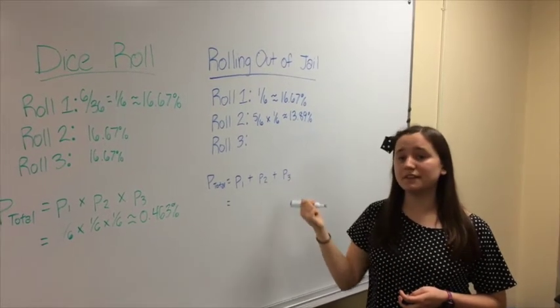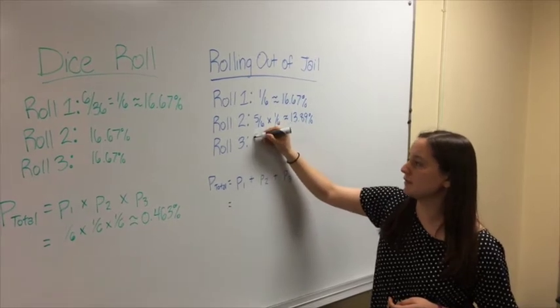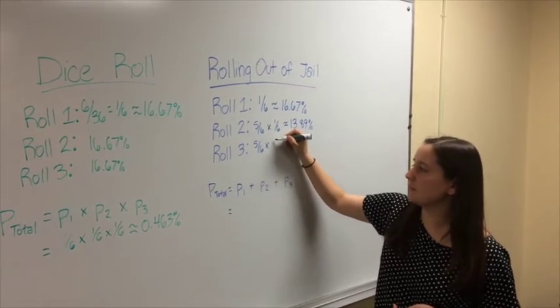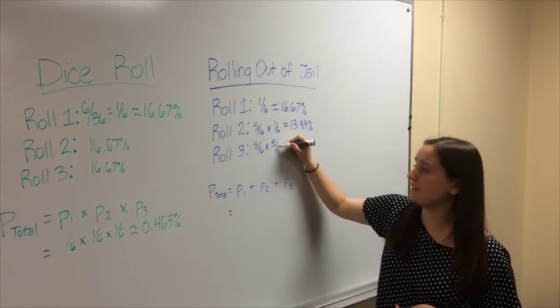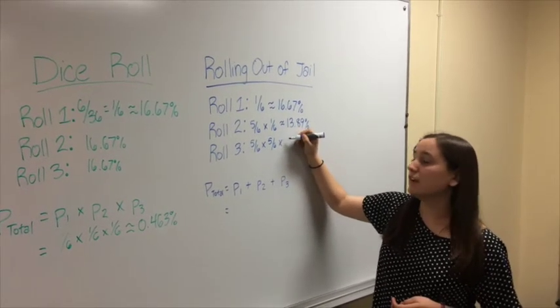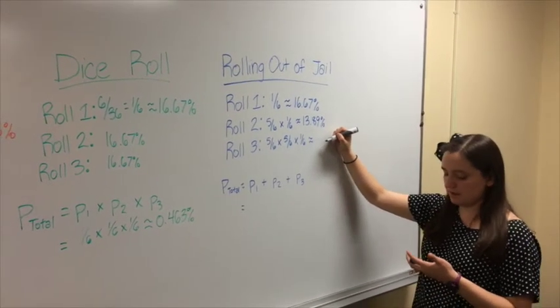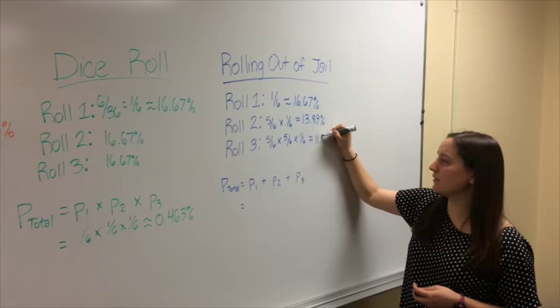Now, for the third roll, it's done very similarly. You can see for the first roll, 5 sixth chance of not rolling doubles, times the second roll, also a 5 sixth chance of not rolling doubles, times, now here's your 1 sixth of you actually rolling doubles. And this equates to about 11.57%.